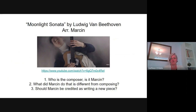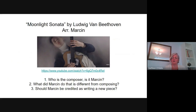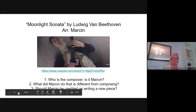What I want you to do now is check out this guitar artist version of Moonlight Sonata. This performer is named Marcin — he's from Poland, he's like 19 or 20, very young. He has a version of Moonlight Sonata. Listen to it and think about these discussion questions: Who is the composer — is it still Beethoven or is it Marcin? What did Marcin do that is different from composing? Should he be credited for writing a new piece, or should Beethoven get the credit? Pause this lesson and take a listen to Marcin's version.